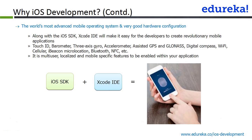Device features available through the SDK include Touch ID and the barometer. The barometer lets you measure atmospheric pressure — useful if you want to build a weather app, for example. With the SDK you can access all these device-specific features.